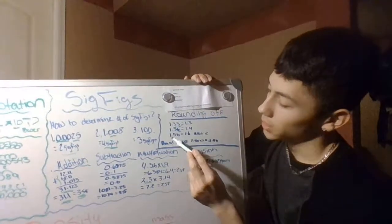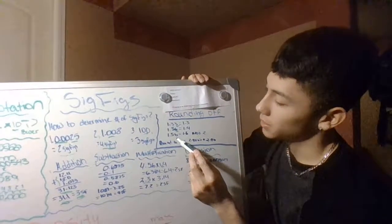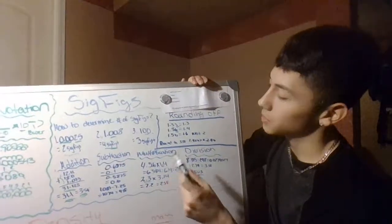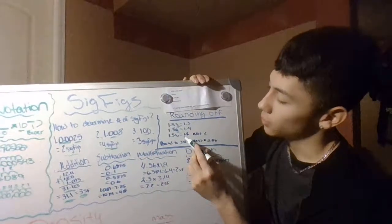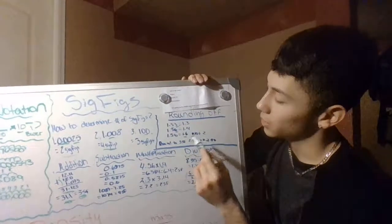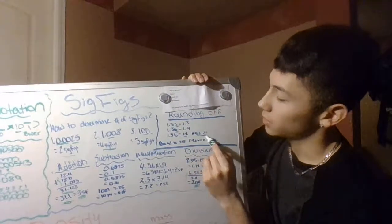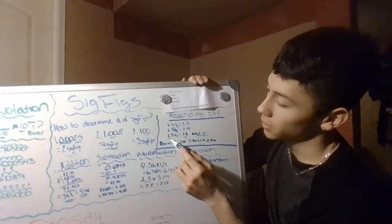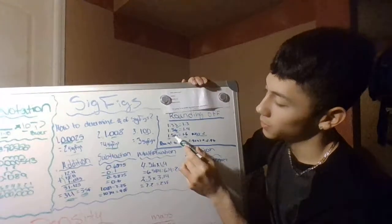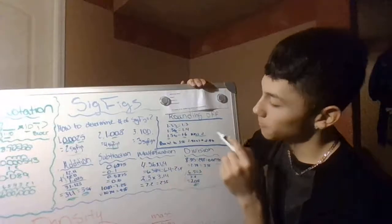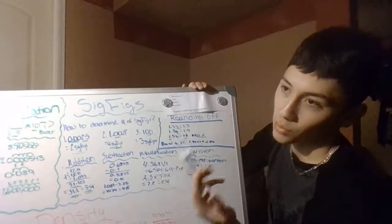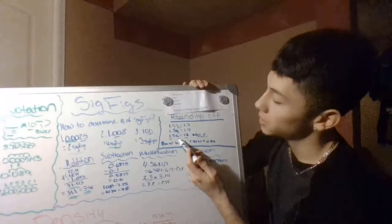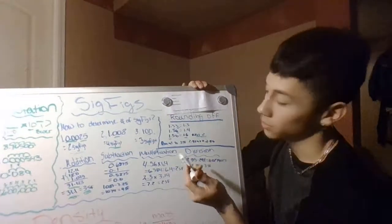Another example is 1.56. A lot of people mess up by rounding this all the way to 2 as a whole number, but you should only round the 5 up by one place. The correct answer is 1.6, not 2.